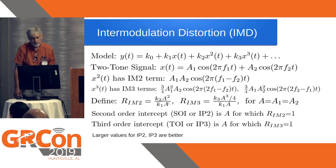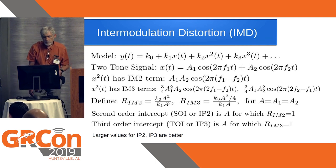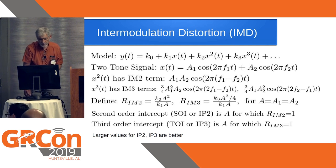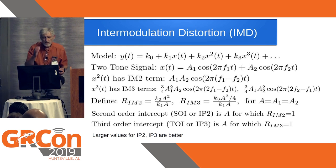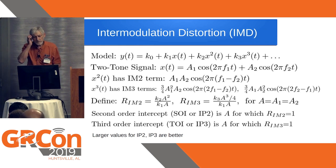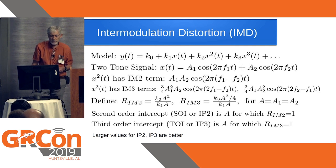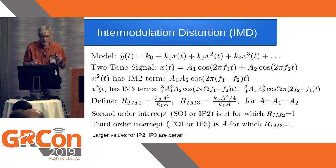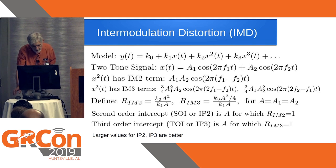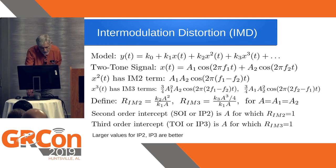To measure all of this, you may have seen IP2 and IP3 specifications. You basically try to figure out what the coefficients k2 and k3 are by looking at the additional frequency components being generated and relating them to the actual frequency of the transmitted signal. More details are in the accompanying paper. In general, larger values for IP2 and IP3 are better.